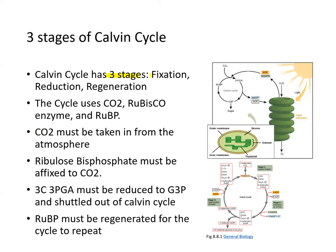The Calvin cycle occurs in three stages: first is fixation, second is reduction, third is regeneration. The cycle uses CO2, rubisco, and RuBP. CO2 must be taken in from the atmosphere, and ribulose bisphosphate must be fixed to CO2. The 3-carbon 3-PGA must be reduced to G3P, and then the 6-carbon G3P is shuttled out of the Calvin cycle as the precursor of glucose.